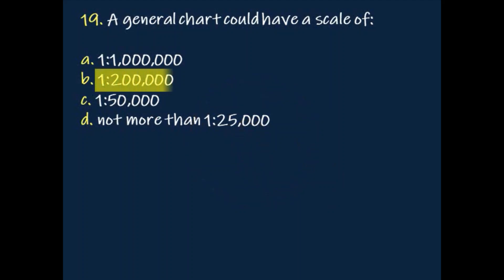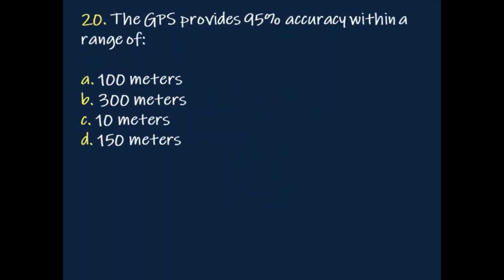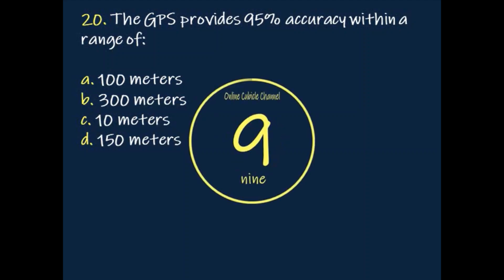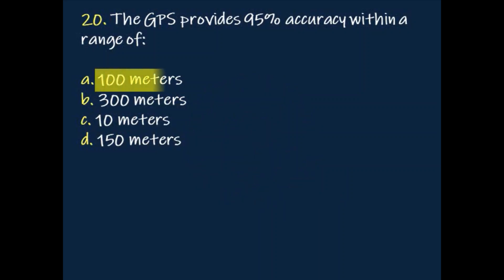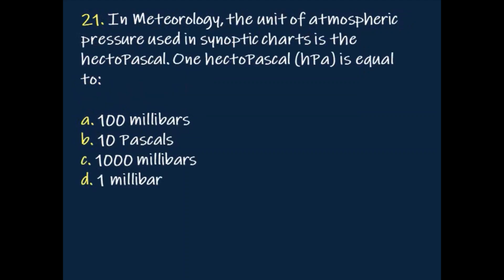Question: A general chart could have a scale of? Answer: One is to 200,000. Question: The GPS provides 95% accuracy within a range of? Answer: 100 meters.